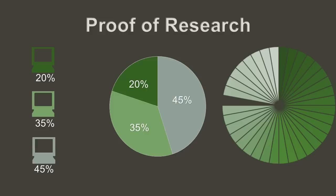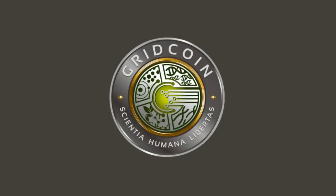If proof of work is a race, and proof of stake is a queue, proof of research is a marathon that never ends. You aren't paid for being the first one to the finish line — you're paid for all the work you've done between each checkpoint. Researchers on the Gridcoin network are doing real work and helping scientists solve some of humanity's biggest problems every day. Why mine when you can research? Learn more at gridcoin.us.